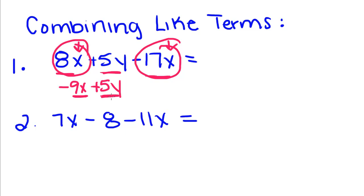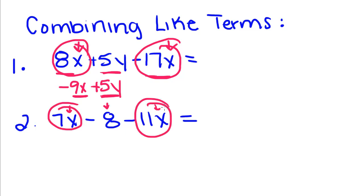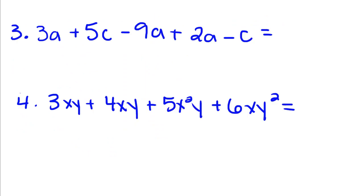We're going to do the same thing with this one. This has an x, this has an x, and this is just a constant. So we're going to combine these: 7x plus negative 11 gives me negative 4x, and then minus 8.